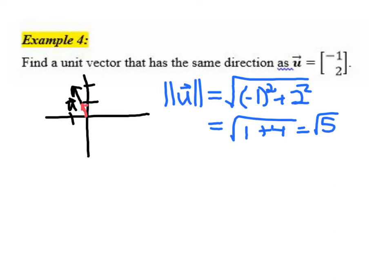So remember that any scalar multiple of u is going to have the same direction. Or I should say any positive scalar multiple of u would have the same direction. If we multiplied by a negative number, then that would reverse the direction down kind of this way. So we know I want to multiply by a scalar. That'll keep the same direction.